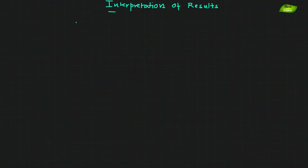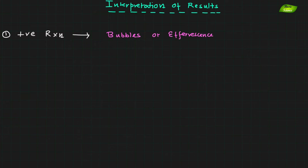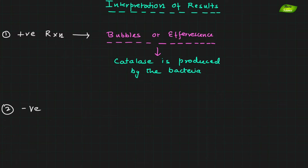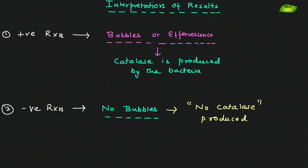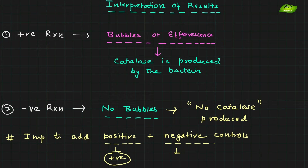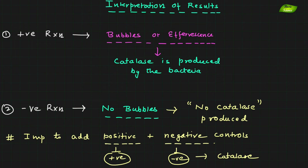The next part is how you analyze the results. There are two conditions. First, when the reaction is positive: you will have bubble production on the glass slide, indicating catalase is produced by the bacteria. Second, when the reaction is negative: there is no bubble production, hence no catalase enzyme is being produced. It is very important to include positive and negative controls. A positive control can be a bacterial strain known to produce catalase or a catalase enzyme solution. A negative control can be water or any solution that produces no bubbles.